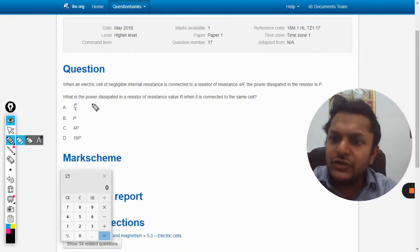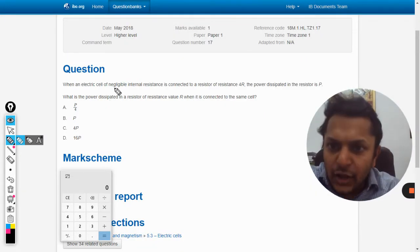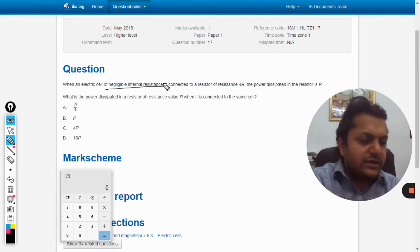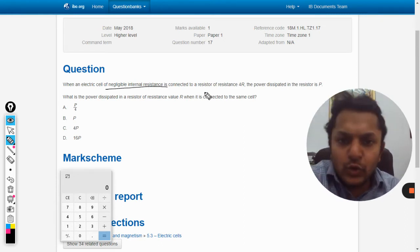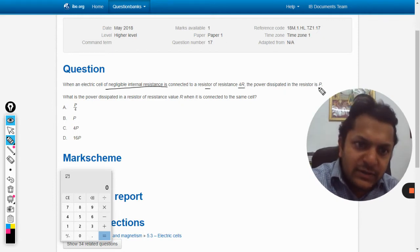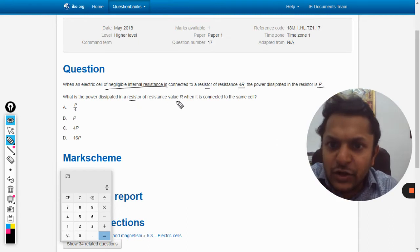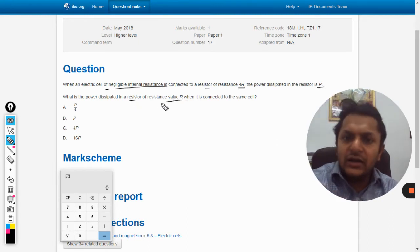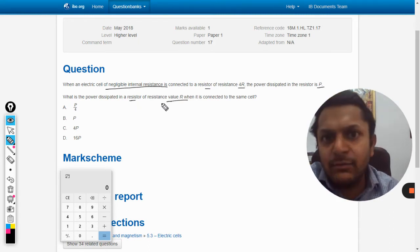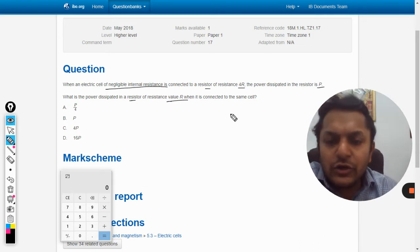In this question, when an electric cell of negligible internal resistance is connected to a resistor of resistance 4R, the power dissipated by the resistor is P. What is the power dissipated in the resistor of resistance value R when it is connected to the same cell?